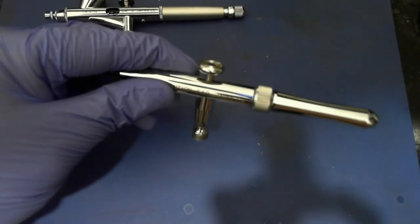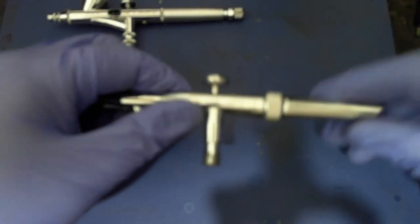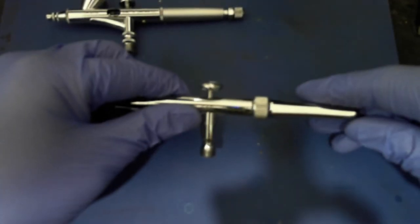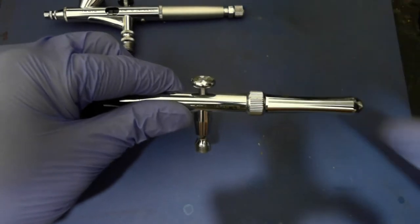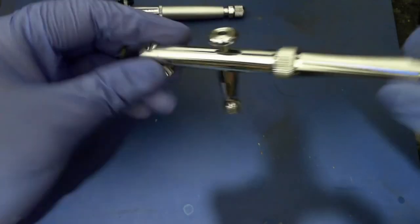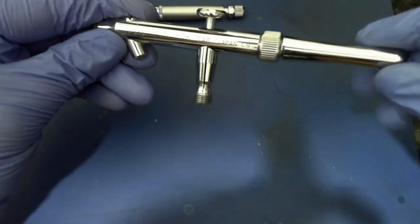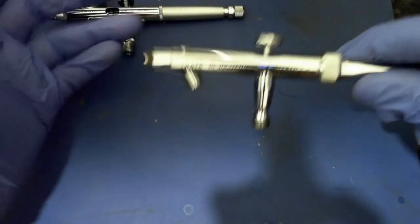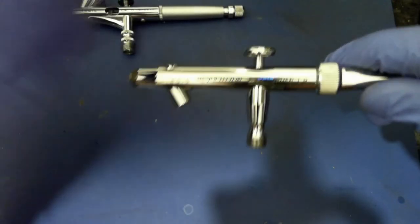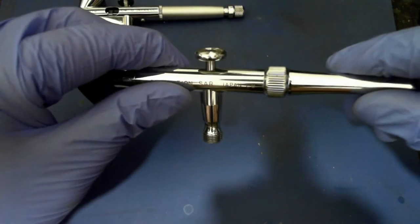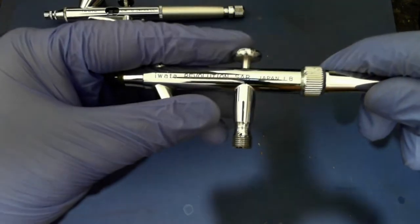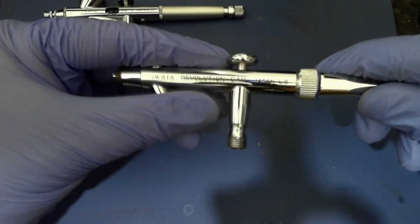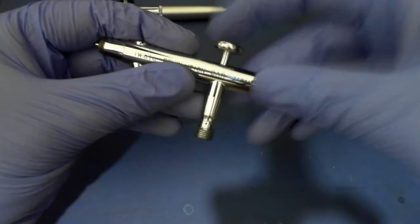Given their simpler construction, single action airbrushes tend to be less expensive. Also, the simpler operation makes them ideal for beginners. This was my first airbrush ever—an Iwata Revolution, single action, bottom feed. You'll see about the bottom feed later. So the movement of the trigger is only this: only down and up, nothing else.